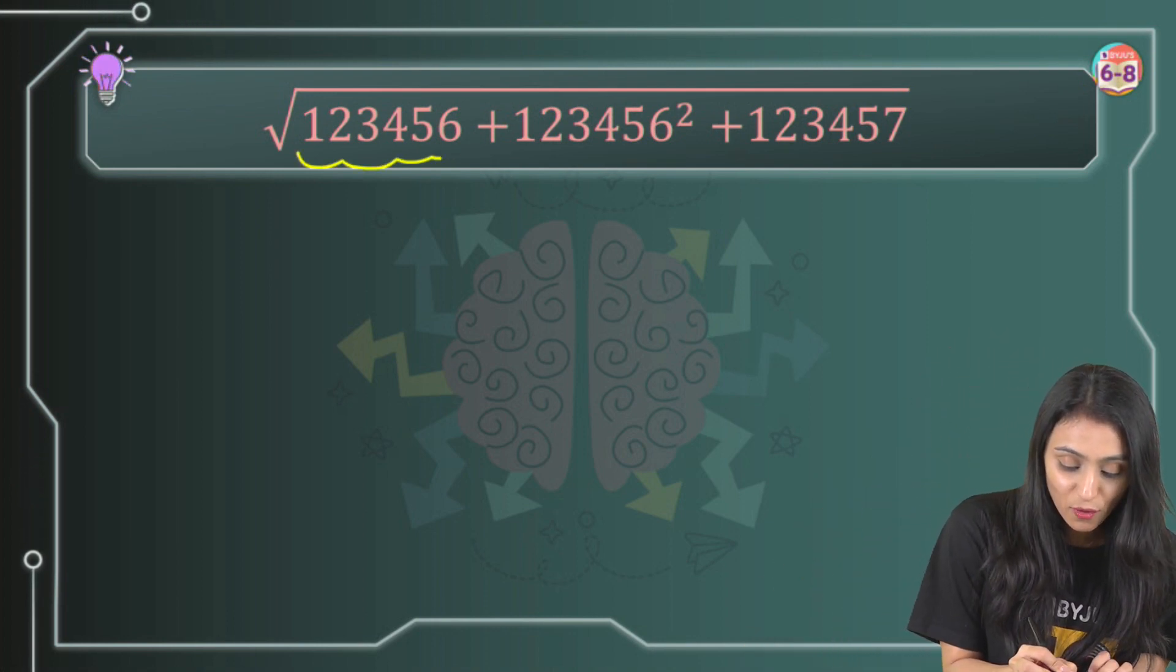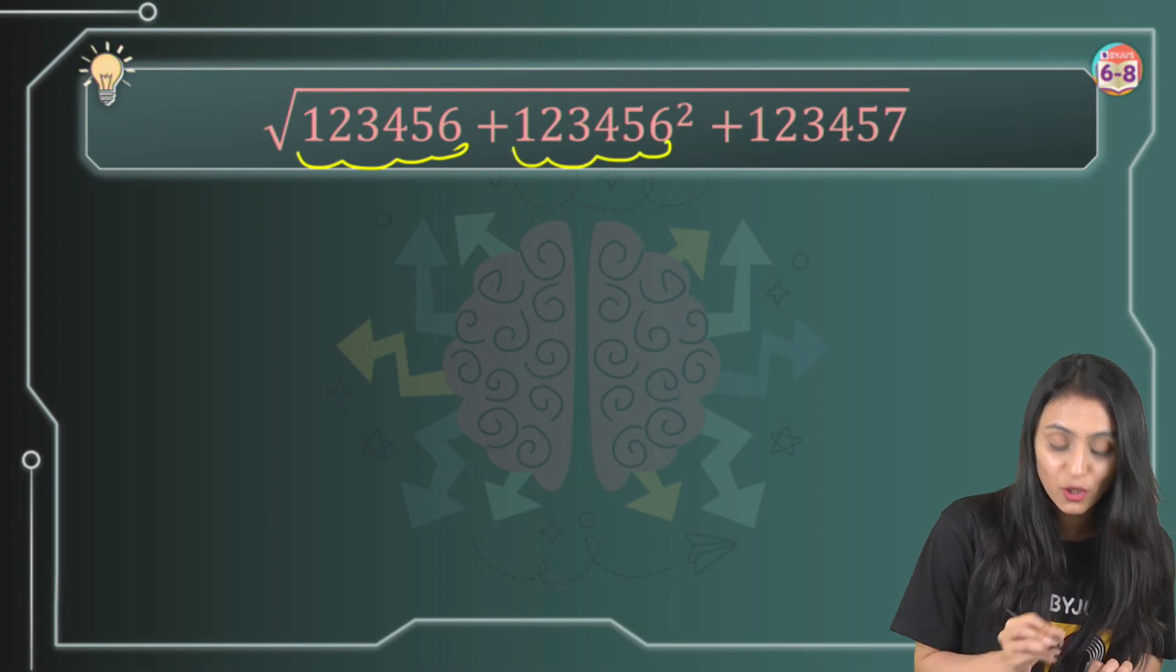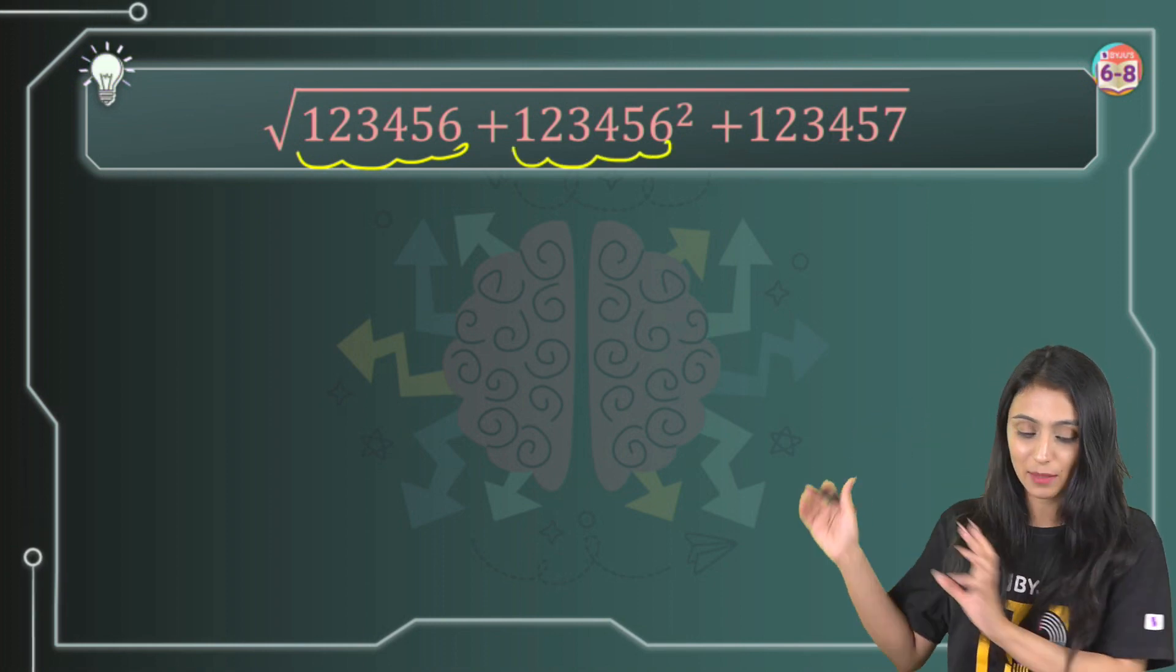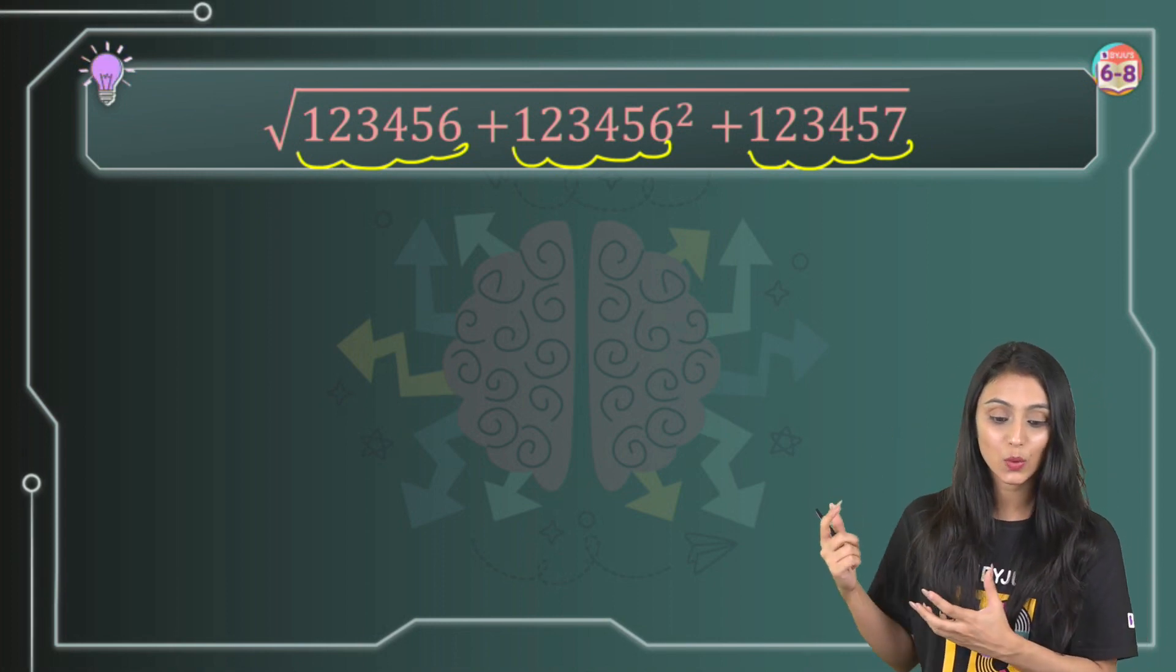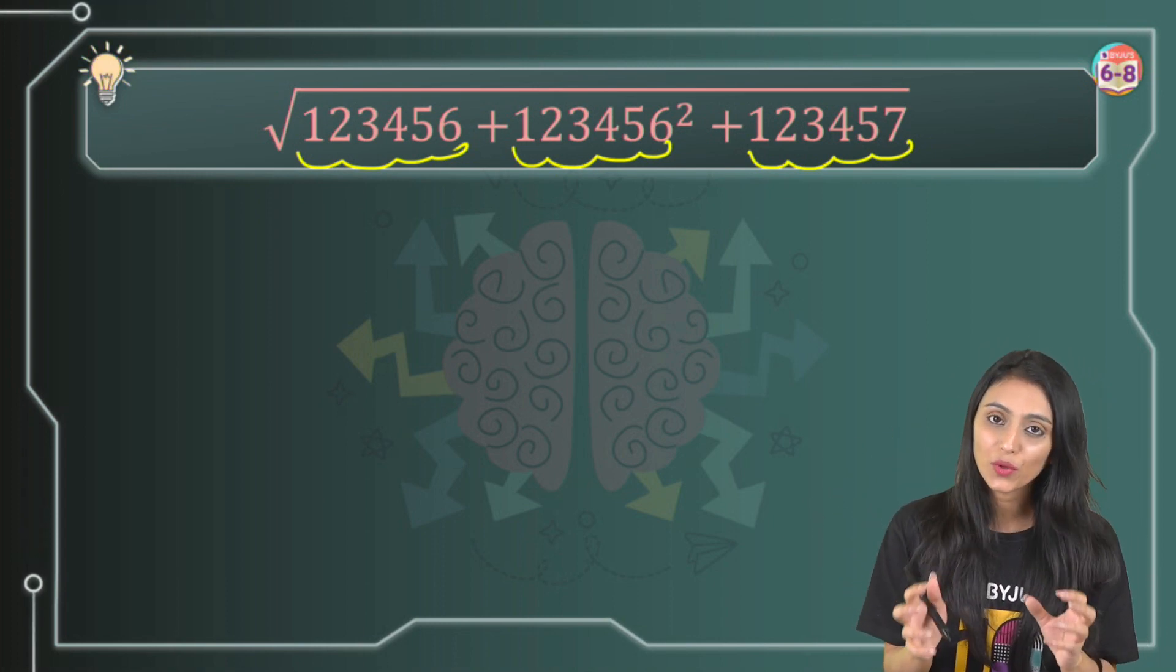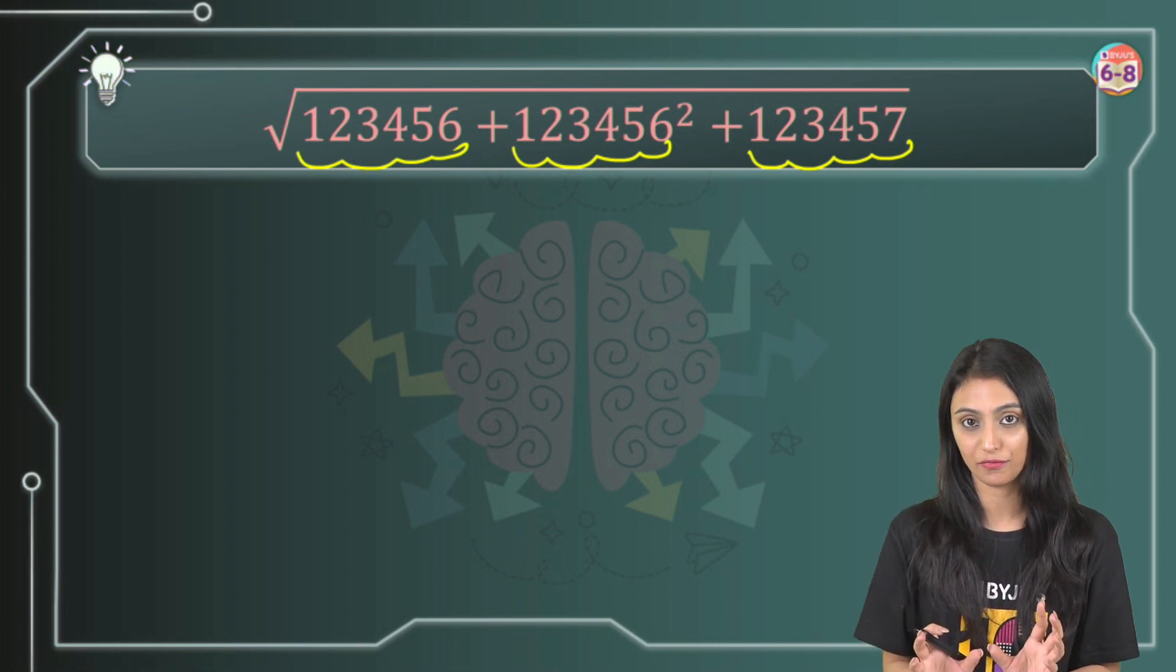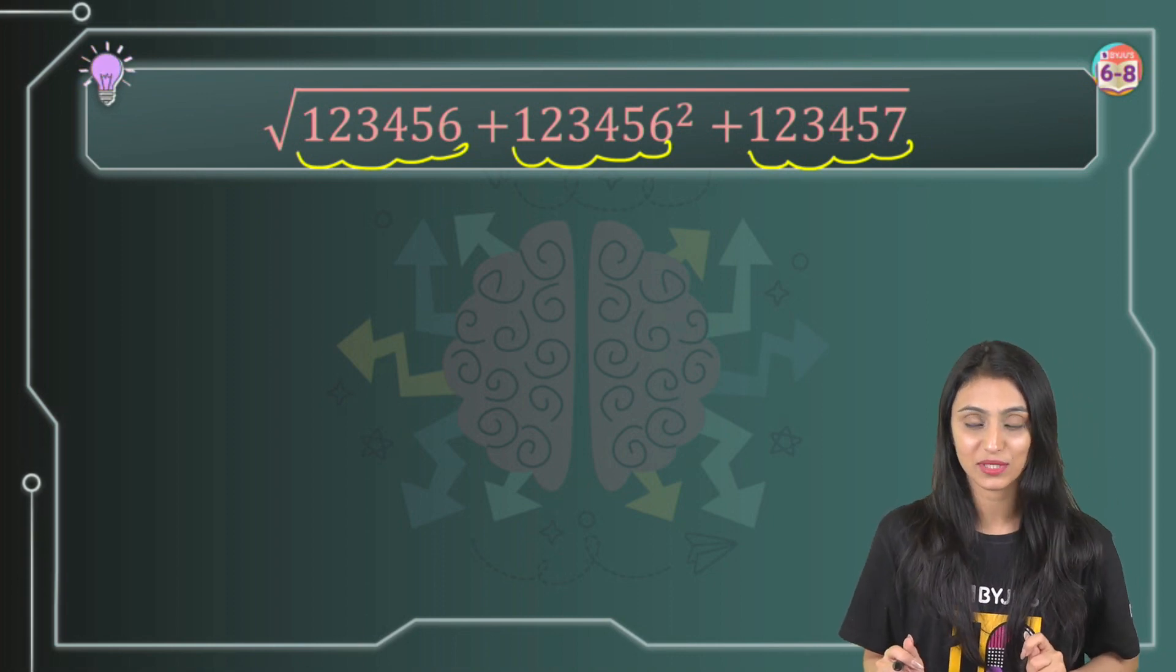Alright, so let's see, what we can do here is, you can see it's 123456. This is also 123456. Just observe all these numbers first. This is 123457. And when you come across such kind of questions, the main thing that you have to do here is first observe them carefully. Definitely you will be able to figure out something.